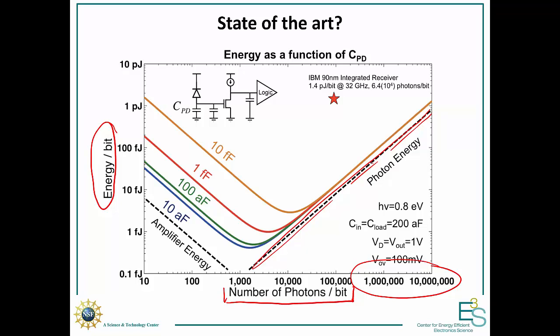So, as you can see, all these curves come and lie against the photon energy. And then, we've got four different lines here, and they all correspond to different capacitances associated with the photodiode. So, in the first, on the orange line, you've got a photodiode that's 10 femtofarads. The red, one femtofarad, 100 attofarads for the green, and finally, 10 attofarads for the blue.